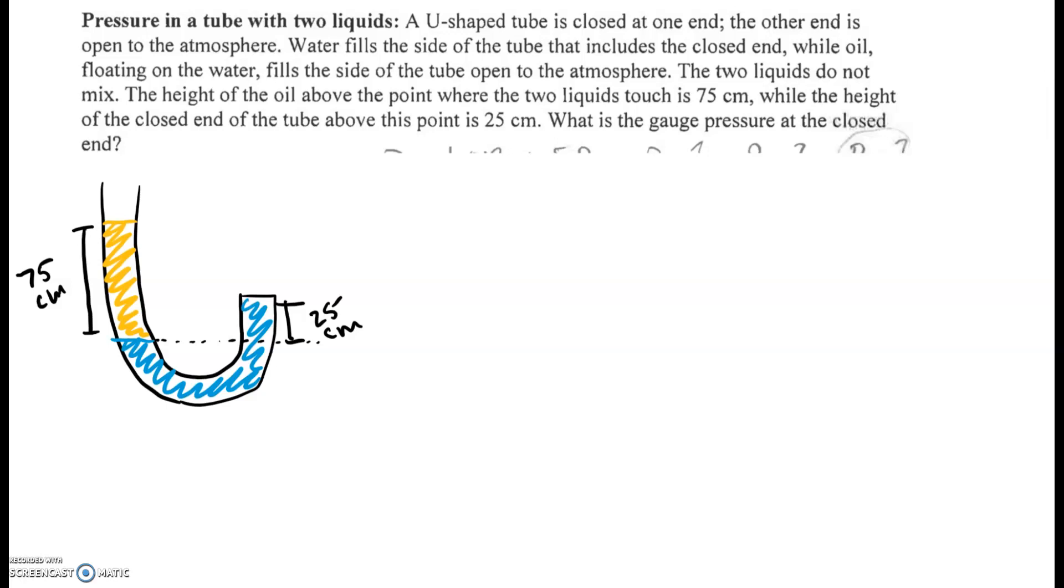What this is describing in words is this diagram here. We've got a U-shaped tube. We have water filling at the closed end, and then oil on top of that. The two liquids don't mix, which we already know since water and oil don't mix. The height of the oil above this point is 75 centimeters. It's telling us this height here of the oil is 75 centimeters.